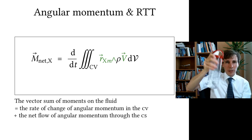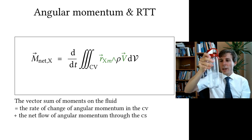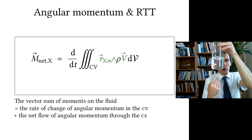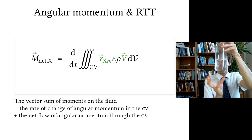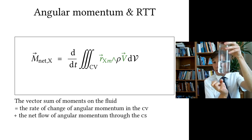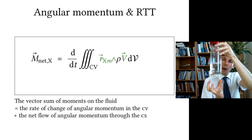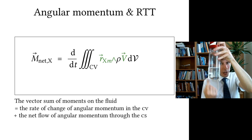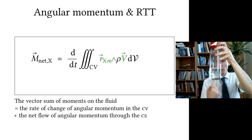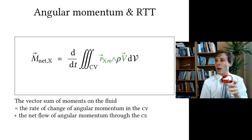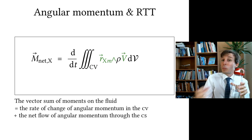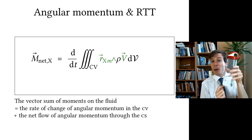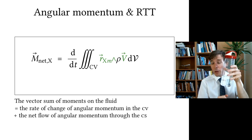You now have a spinning body of water inside the bottle. If this spinning body slows down due to friction from the walls, the angular momentum reduces, and this results in a net moment — the moment exerted by the walls on the fluid.